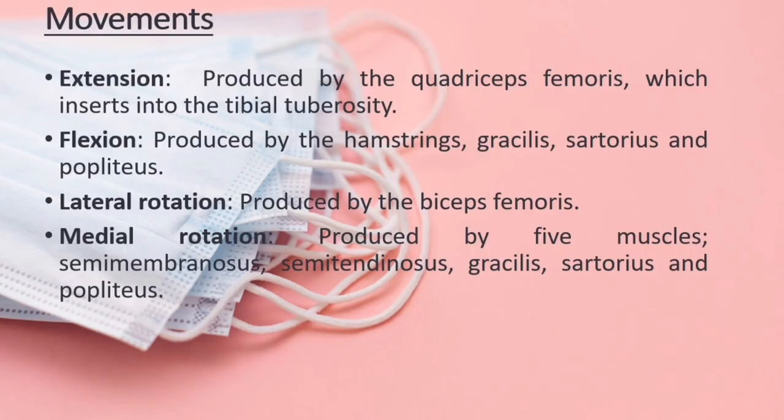Movements. There are four main movements at the knee joint. Extension is produced by the quadriceps femoris, which inserts into the tibial tuberosity. Flexion is produced by the hamstrings, gracilis, sartorius and popliteus. Lateral rotation is produced by the biceps femoris. Medial rotation is produced by five muscles: semimembranosus, semitendinosus, gracilis, sartorius and popliteus. Note: lateral and medial rotation can only occur when the knee is flexed; if not flexed, medial/lateral rotation occurs at the hip joint.